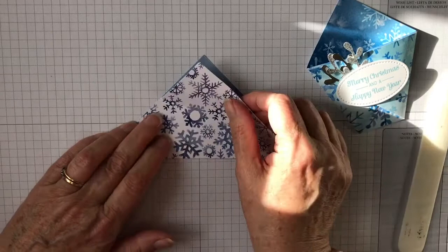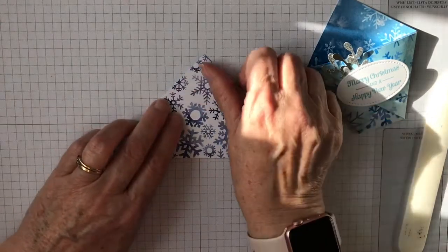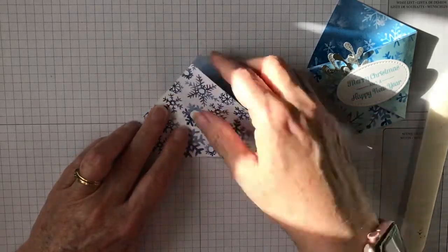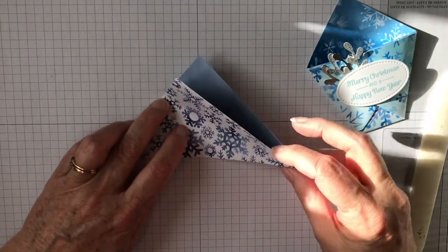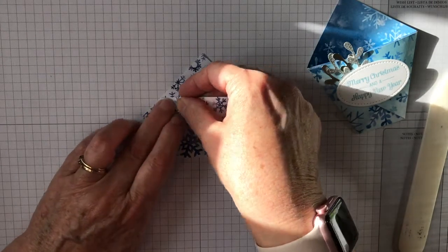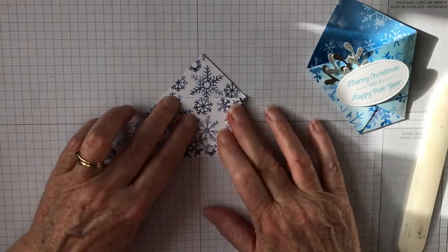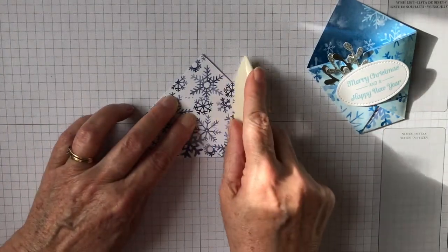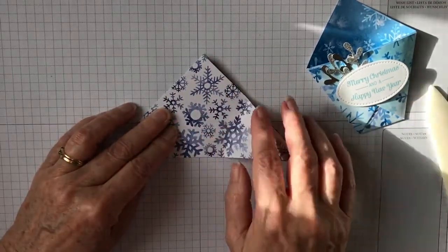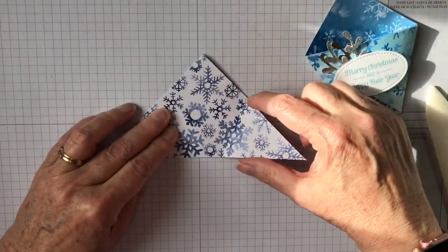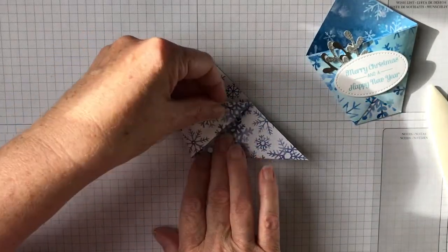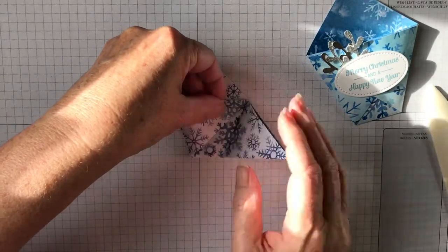Now take the opposite point and bring that across to where your pinch point is, and then fold that. If you undo that, you've now got another pinch point. So do the same with the opposite corner. Bring that across to that pinch point, make sure it's lined up correctly, and then fold.